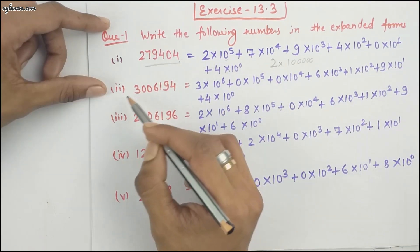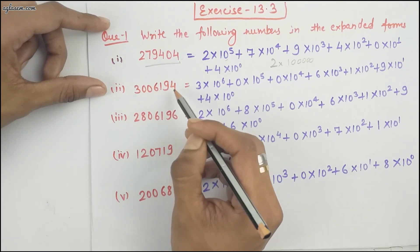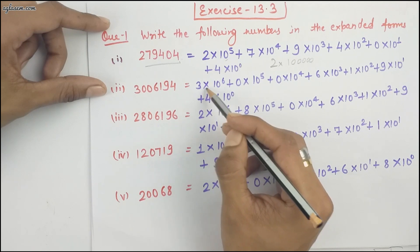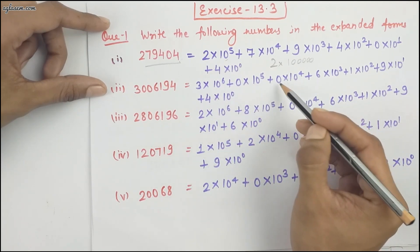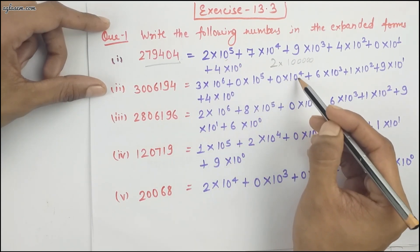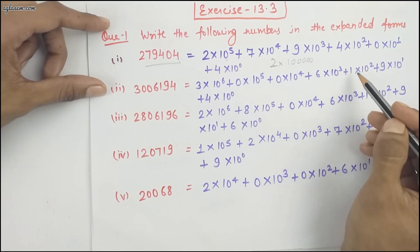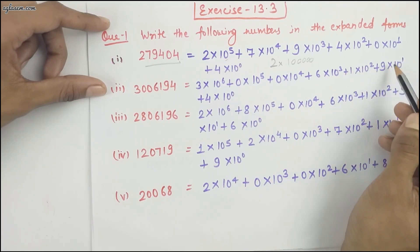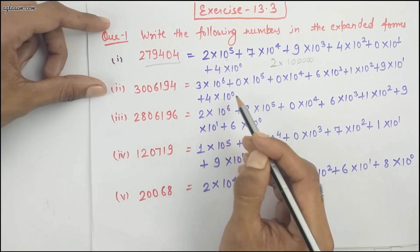Moving to the next part, that is 30,06,194. It can be written as 3 into 10 to the power 6, plus 0 into 10 to the power 5, plus 0 into 10 to the power 4, plus 6 into 10 to the power 3, plus 1 into 10 to the power 2, plus 9 into 10 to the power 1, plus 0 into 10 to the power 0.